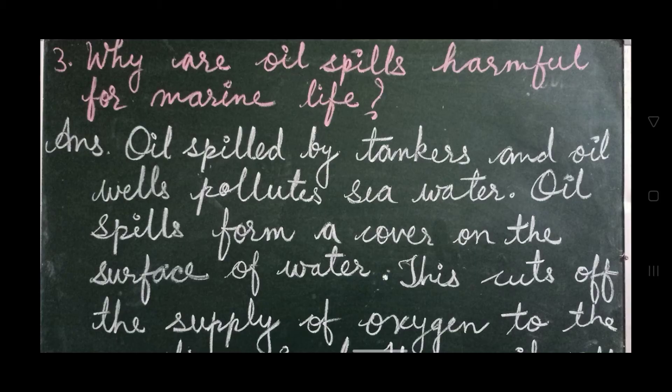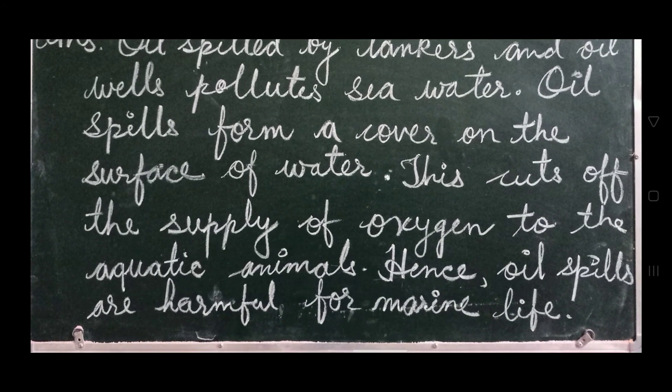Now let's see the next question. Question number 3: Why are oil spills harmful for marine life? Answer: Oil spilled by tankers and oil wells pollutes seawater. Oil spills form a cover on the surface of water, which cuts off the supply of oxygen to the aquatic animals. Hence, oil spills are harmful for marine life.